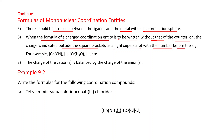For example, if the coordination entity has a negative charge, the entity is enclosed in square brackets and the charge is indicated outside — for instance, 3 negative. In another case, the charge may be 3 positive. The charge of the cation is balanced by the charge of the anion. These are the rules to write the formula of mononuclear coordination entities. Now let's discuss with some examples.